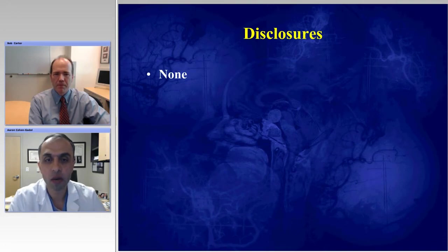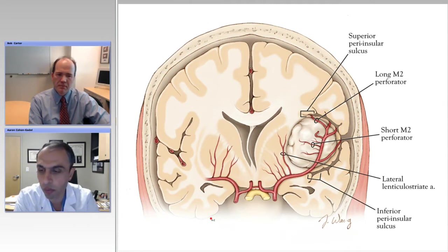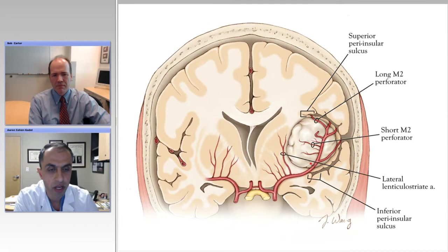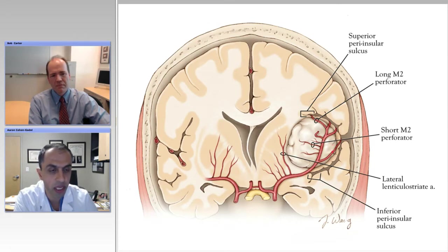There are no disclosures for either of us for this presentation. We're going to talk about insular gliomas. I thought we can open up with an illustration that embodies the most important techniques in resection of these tumors. The tumor is in a very functional cortex, and not only can the cortex itself be functional, it is also bounded by very important neurovascular structures. Medially, it is bounded by the lateral lenticulostriate arteries, and superficially by the MCA.